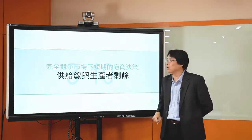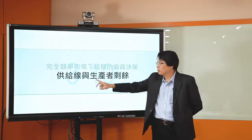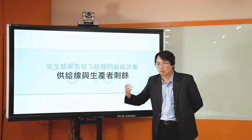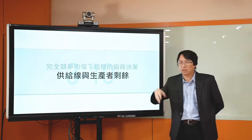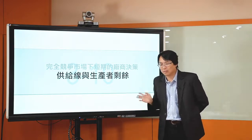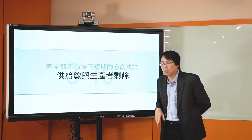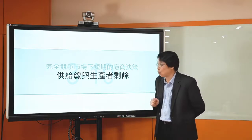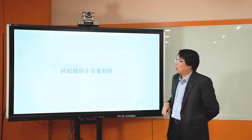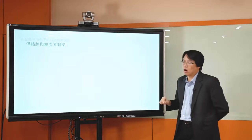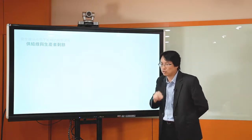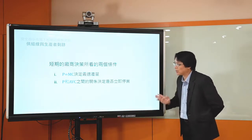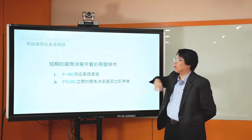我們在前面有談過需求線。需求線討論買方在給定不同價格的情況下，願意且能夠購買的數量，也就是消費者平均每年、每月或每天願意且能夠購買的數量跟價格的關係。供給線也是一樣，討論的是賣方在給定不同價格之下，他願意且能夠提供的數量，假設其他條件不變。